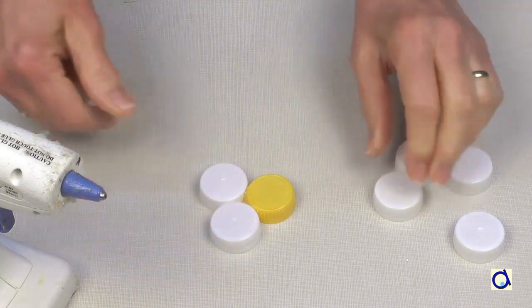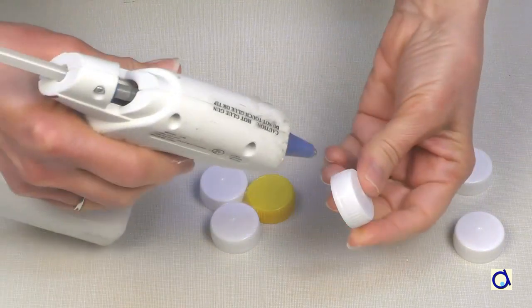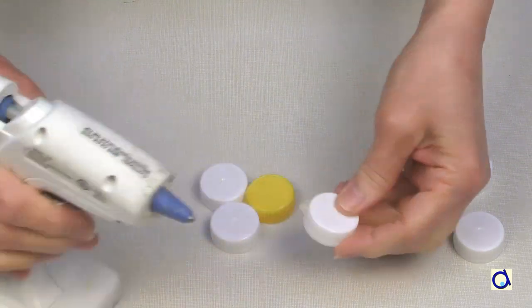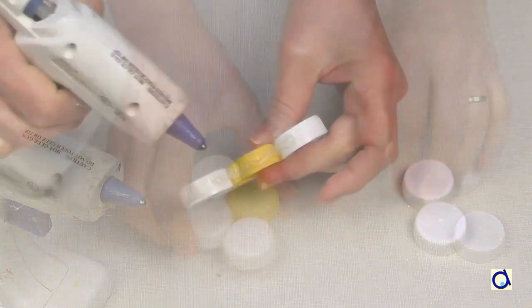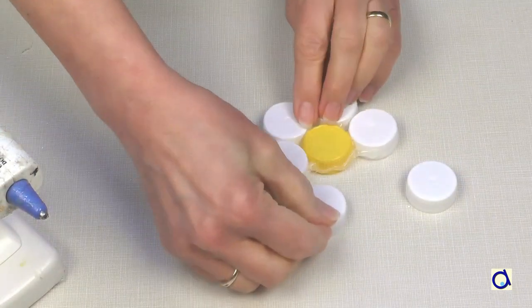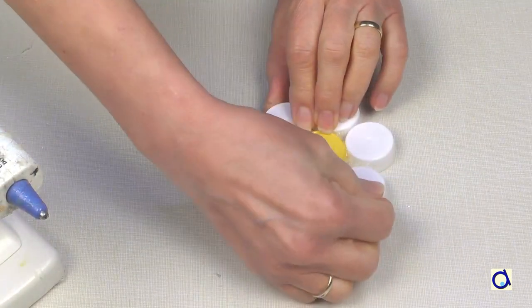Begin by evaluating how many caps you will need to properly surround the center cap. In my case, I needed six white caps. Glue the caps that represent the petals all around the cap at the center of the flower with hot glue.